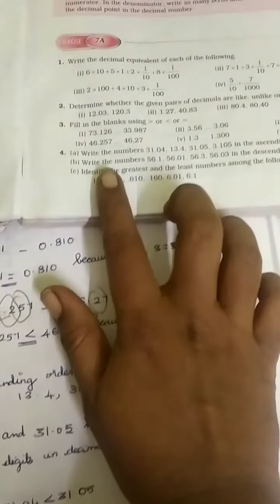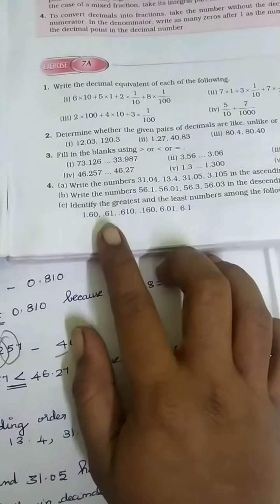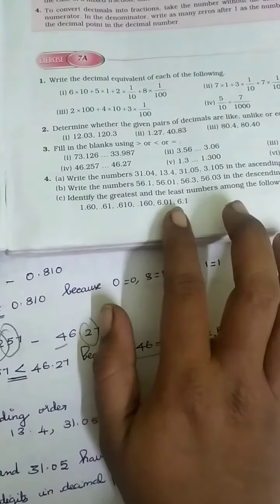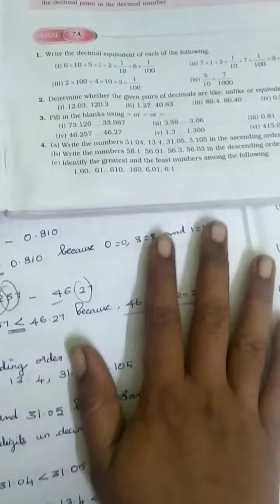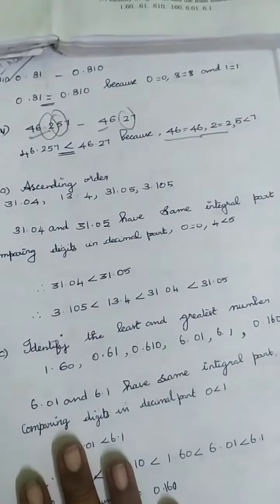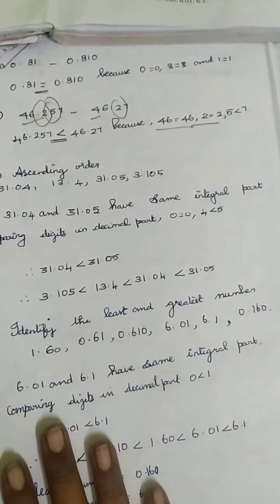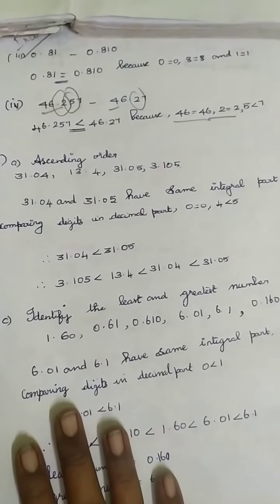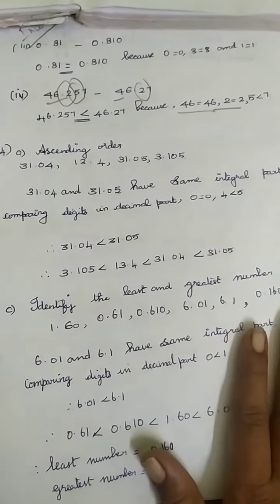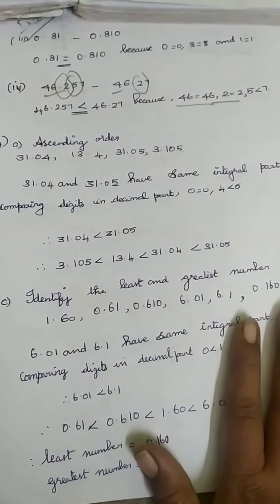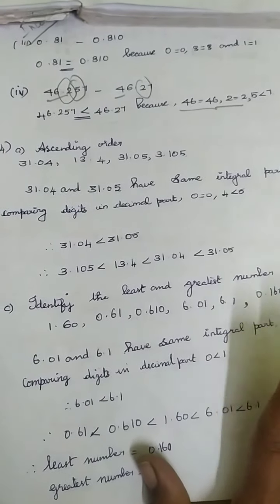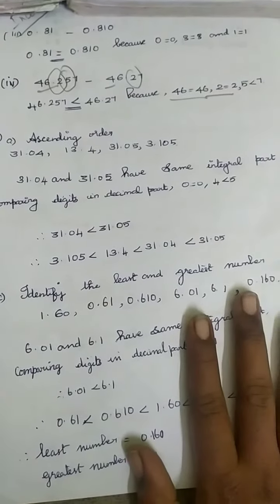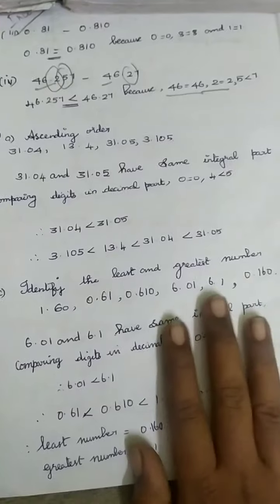B is your homework. C — identify the greatest and the least number among the following. The question asks you to write which is the least number and the greatest number, not to arrange them in ascending order.